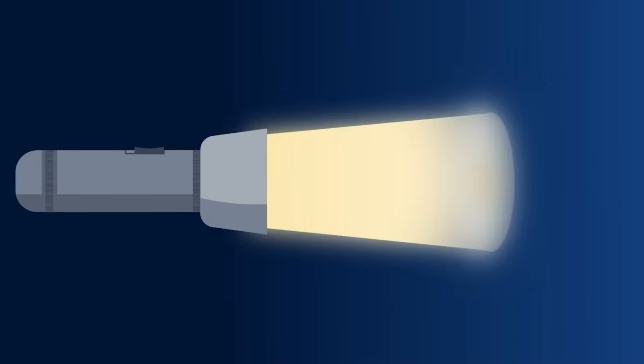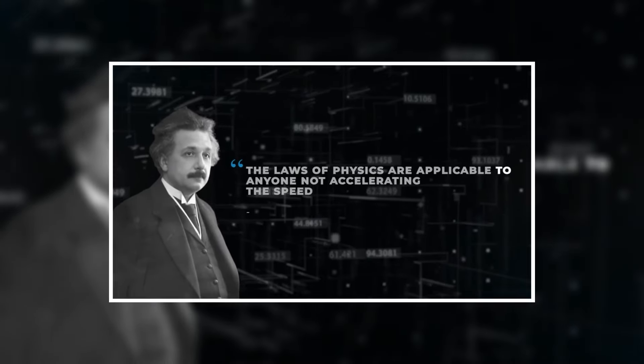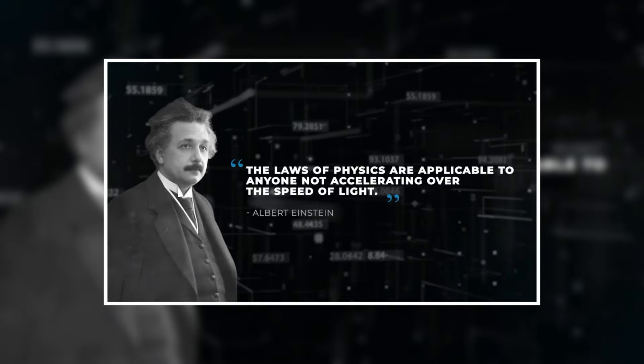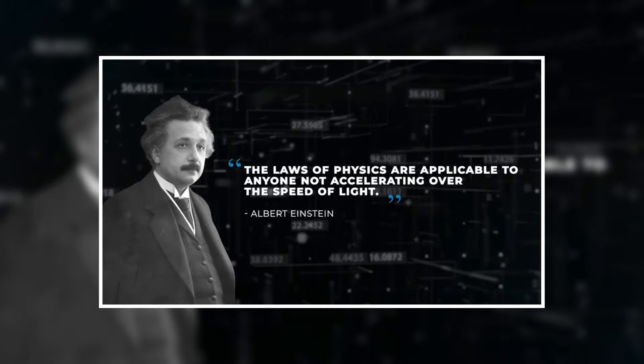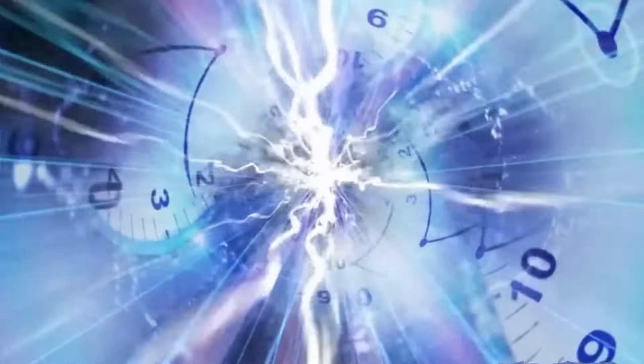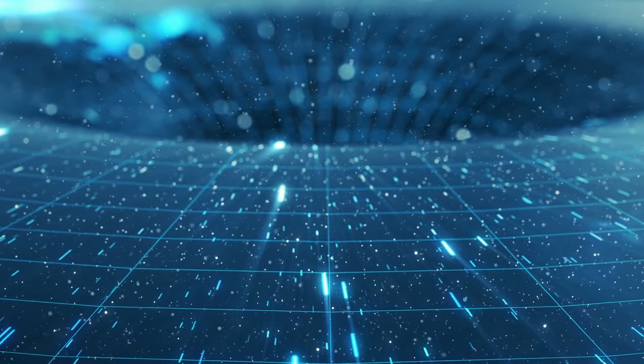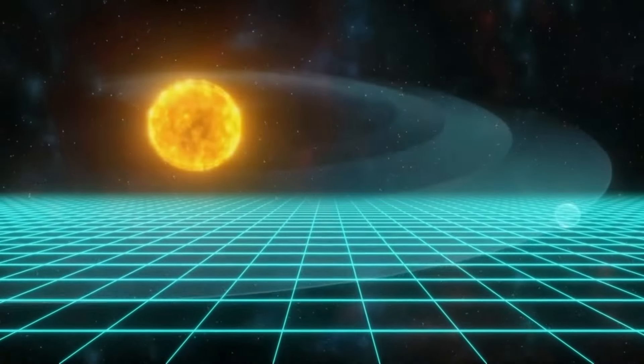The cosmic censorship hypothesis, which postulates that singularities such as those found in black holes, are permanently concealed from outside observers by event horizons, is a key component of this defence. If this theory is right, it could act as a cosmic safety net, preventing the creation of time loops that could lead to causality violations.